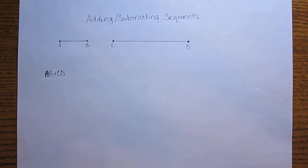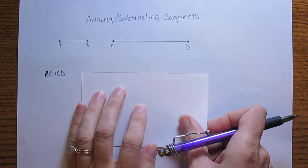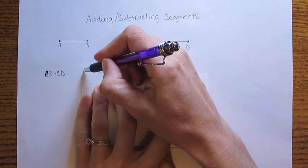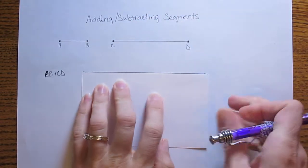So if I add them together I want segment AB plus CD. To do this the first thing I'll do is take my straight edge and use that to draw a nice long line segment.